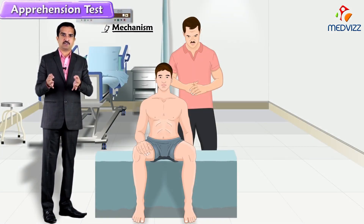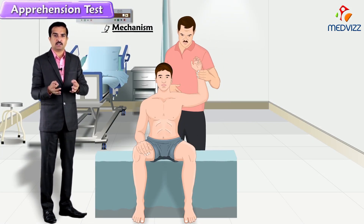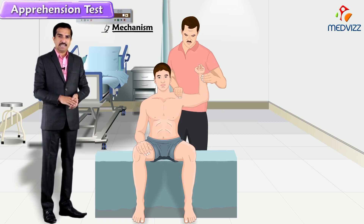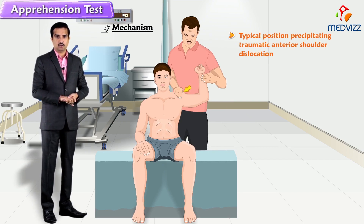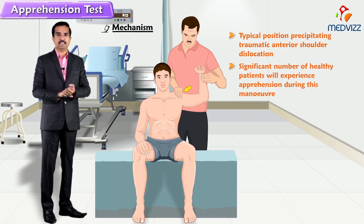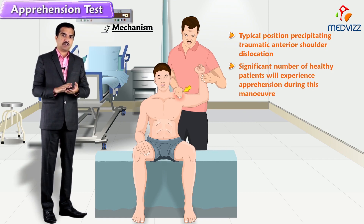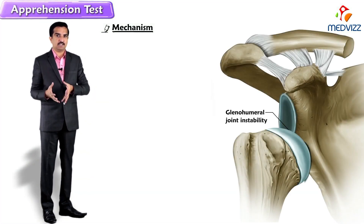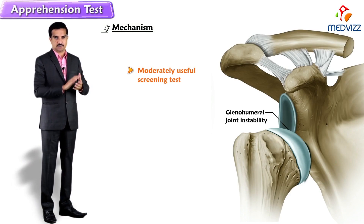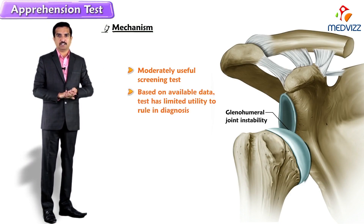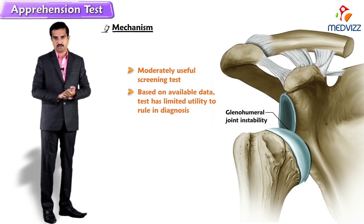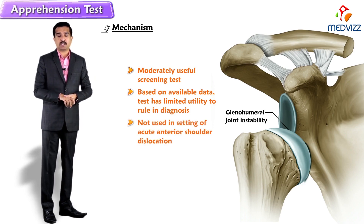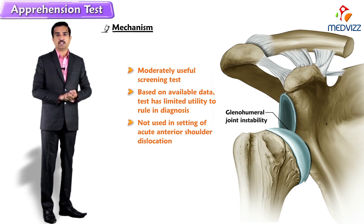In the apprehension test, the joint is placed into a position vulnerable to instability — the typical position precipitating traumatic anterior dislocation of the shoulder. For this reason, a significant number of healthy patients will also experience apprehension during this maneuver. The apprehension test is a moderately useful screening test; however, based on available clinical research data, it has limited utility to rule in the diagnosis and is not used in the setting of acute anterior shoulder dislocation.